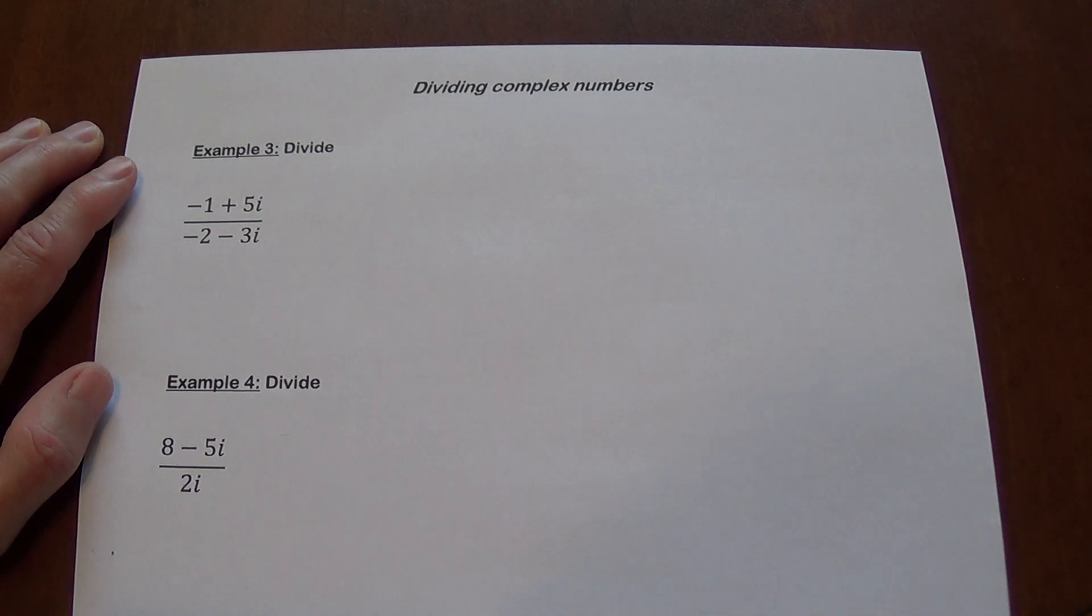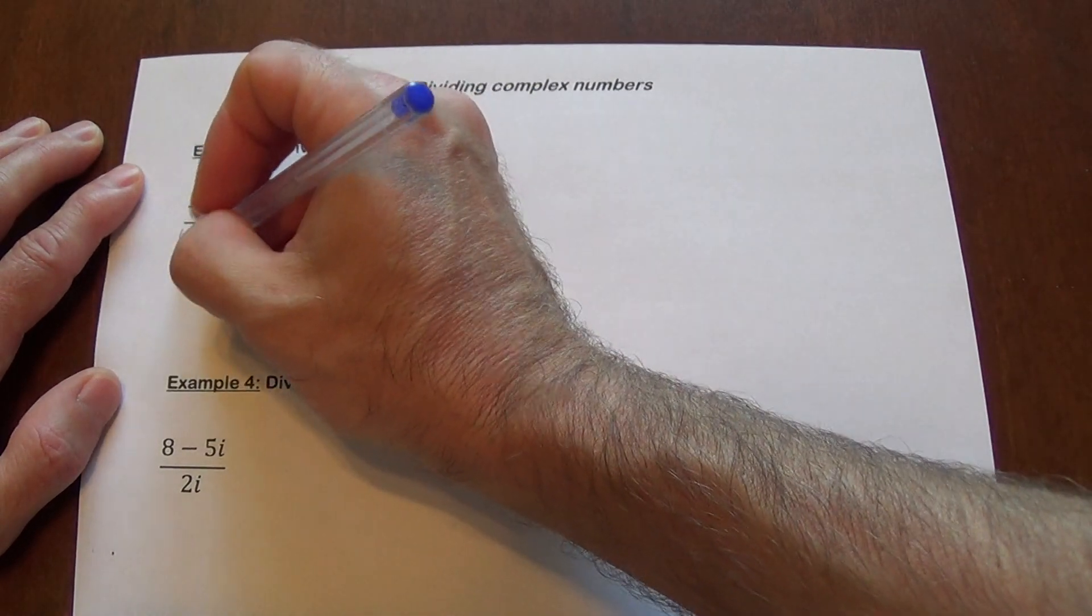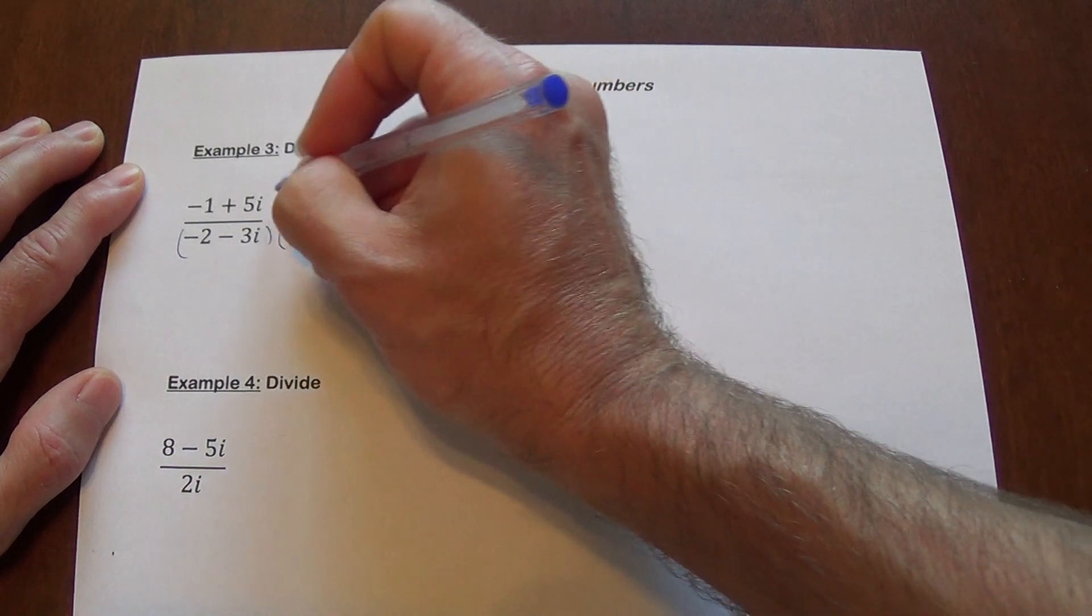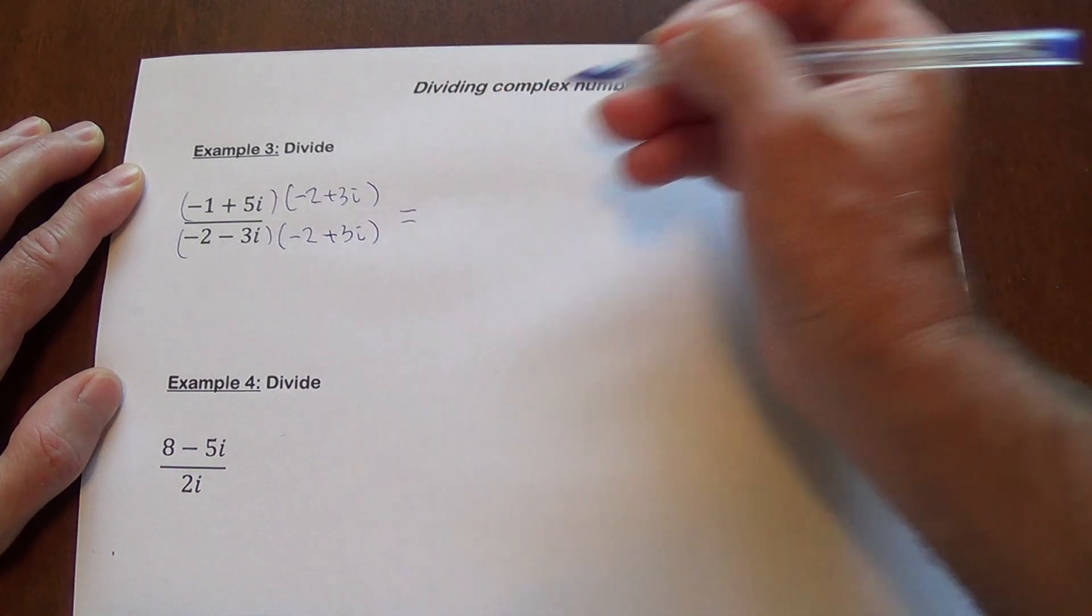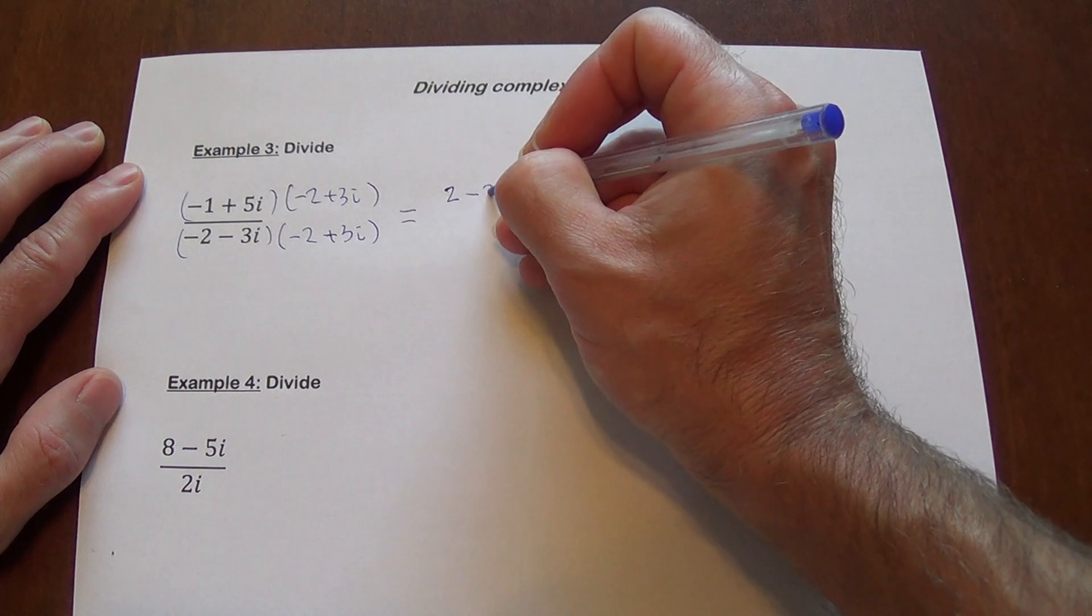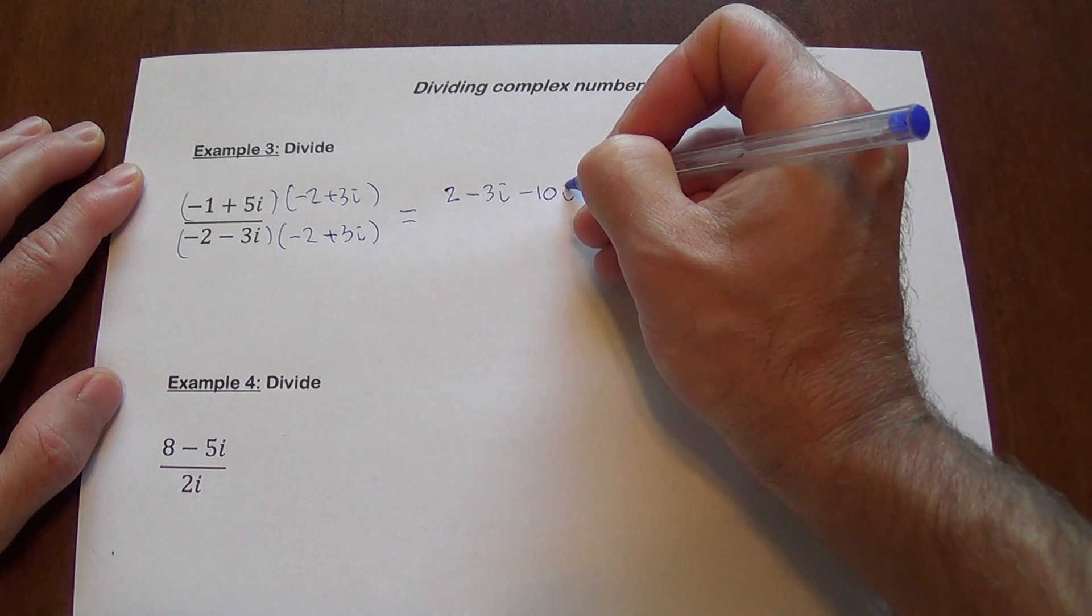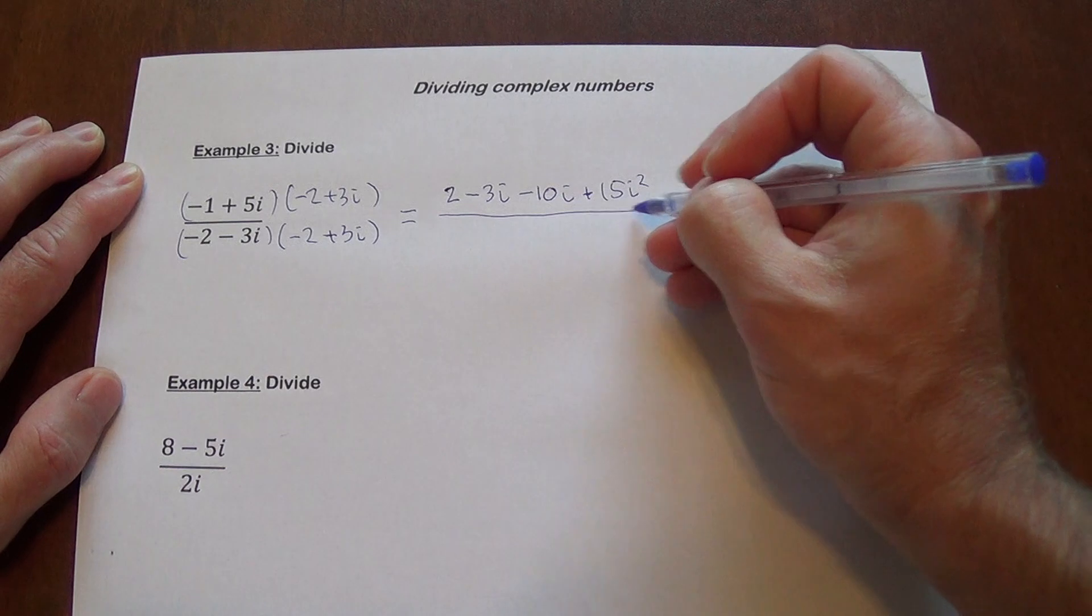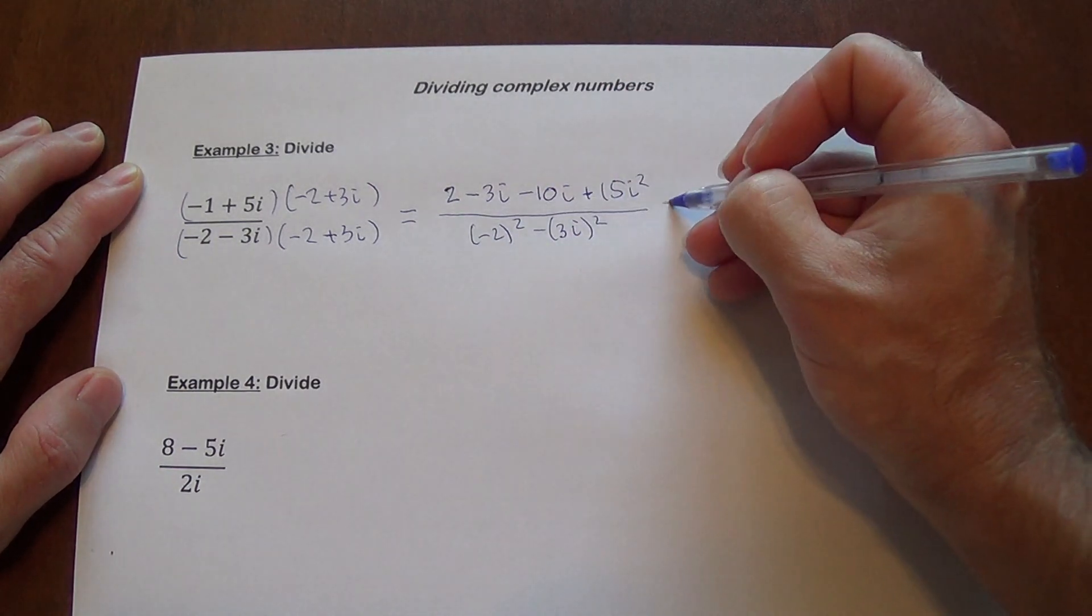So we got negative 1 plus 5i over negative 2 minus 3i. We're going to multiply by the conjugate, which is negative 2 plus 3i. So FOILing that will give us 2 minus 3i minus 10i plus 15i squared all over negative 2 squared minus 3i squared. Please use parenthesis when you do it.